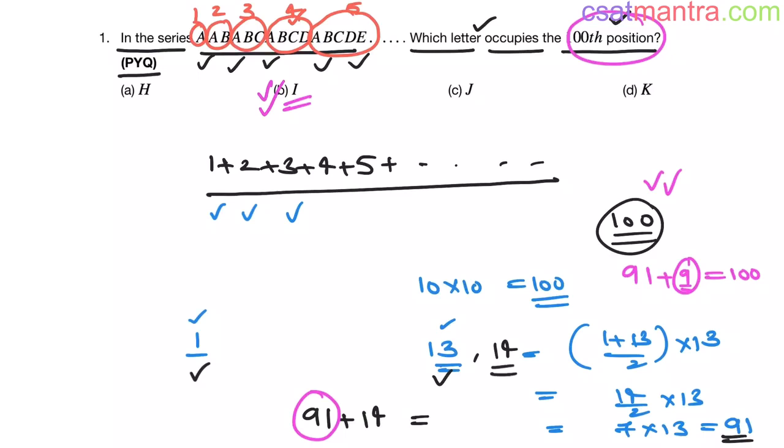So your job is to first identify this series. How these elements are structured? Just pay a little bit of attention. You can easily find out. After that, make use of arithmetic series concepts. These numbers, they are in arithmetic series because common difference is 1.